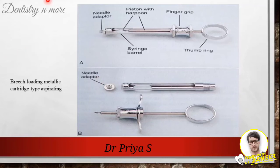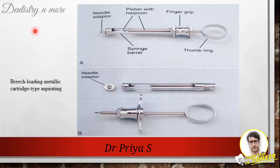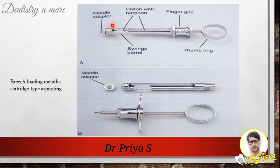The term breech-loading implies that the cartridge is inserted into the syringe from one side of the barrel. There is a hinge mechanism which is operated to insert the cartridge into the syringe barrel. The needle is attached to the barrel of the syringe at the needle adapter, and it passes into the barrel so that it penetrates the diaphragm of the local anesthetic cartridge, which is inserted into the barrel prior to insertion of the needle.